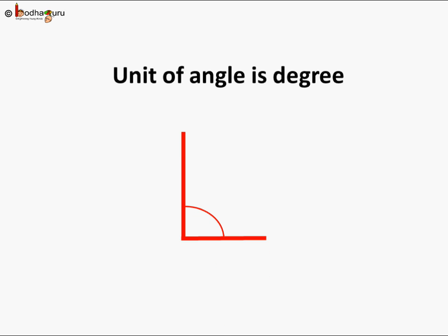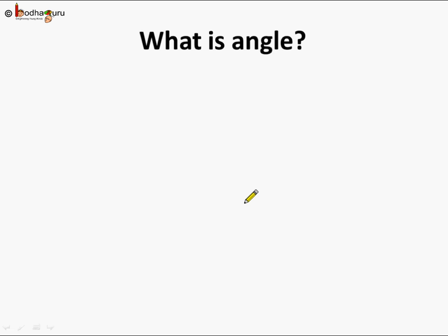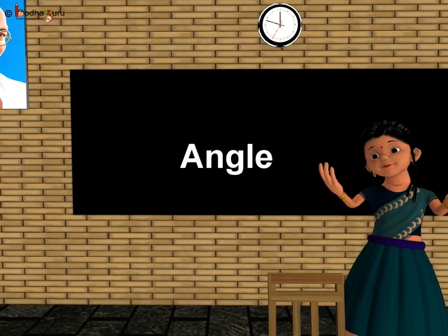And how is it written? Let us see with an example. Here, the two lines are at 90 degrees or at right angles. 90 degrees is written as 90 with a small circle put on the topmost right side. So let us reiterate: the angle is formed when two lines meet at a point, and the amount of turn between these two lines is called the angle. So now you know what is an angle. That's all for now. Bye-bye, children.